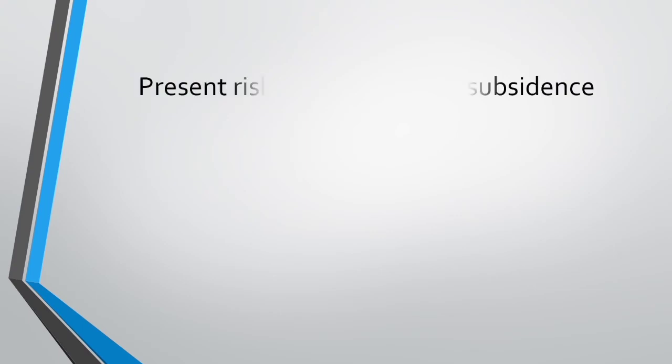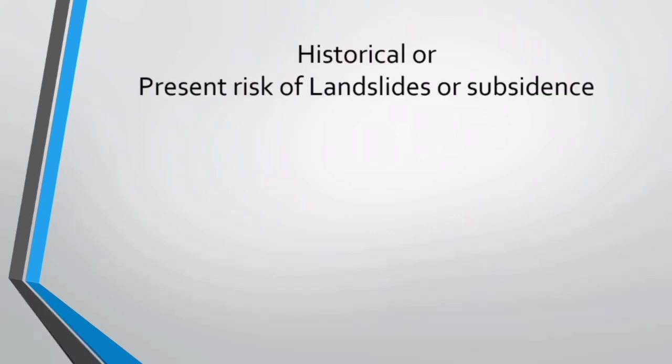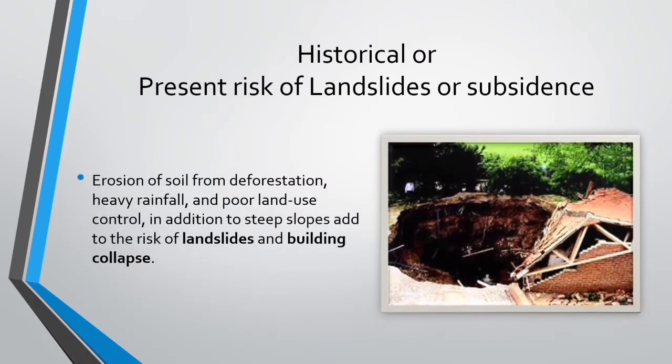Next, historical or present risk of landslides or subsidence. Erosion of soil from deforestation, heavy rainfall, and poor land use control, in addition to steep slopes, add to the risk of landslides and building collapse. So it is much better to check the historical or present risk of landslides or subsidence in the area where you are going to construct your building.